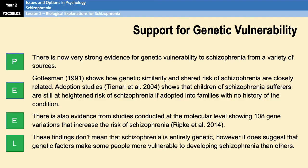Starting with support for the role of genes: we refer to Gottesman from 1991 and Tienari et al. from 2004, which we covered in the outline. This evaluation point summarises that there is a lot of research support for the role of genes in making people vulnerable to schizophrenia. There is also extra evidence from Ripke et al. in 2014, who conducted studies at the molecular level showing 108 different gene variations that increase the risk of schizophrenia. These findings suggest that genetic factors make some people more vulnerable to developing schizophrenia than others.